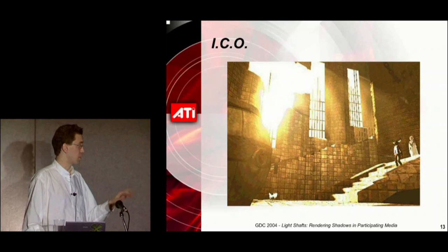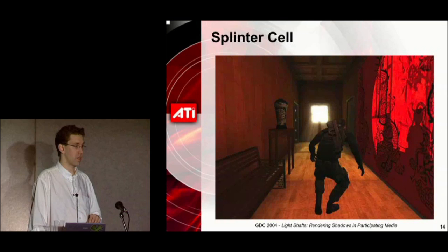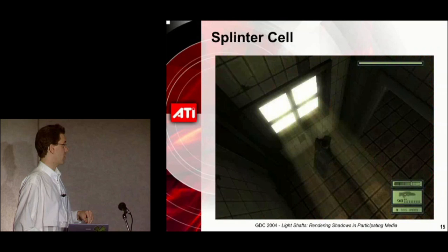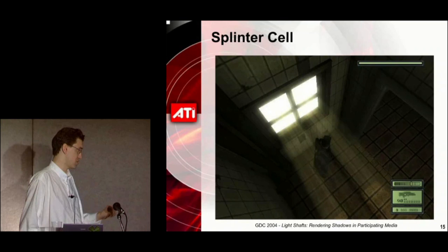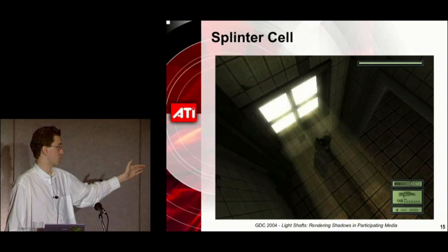Splinter Cell is a game that does this particularly well. You can see the light streaming in from an overhead shot, and the character seems to be casting a shadow there as well — as he walks through, he's actually blocking light from reaching some of the particles behind him, and hence light is not scattering back to your eye.